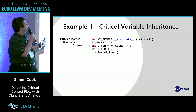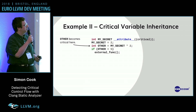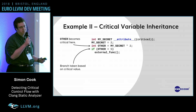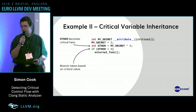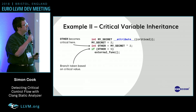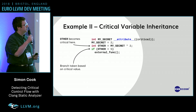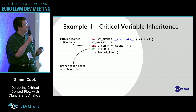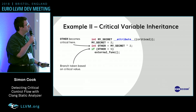So in this case, my variable 'other' becomes critical here, and then there's a branch here, so we want to warn about this as well. Now, this is possibly reaching the limits of what we can easily do with some compiler warnings, but we want to cover this case and more.